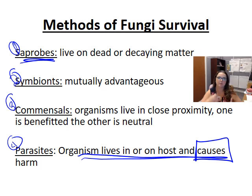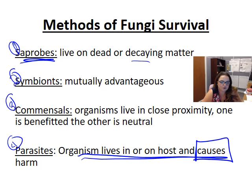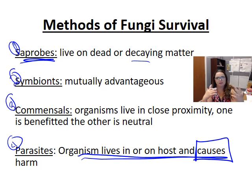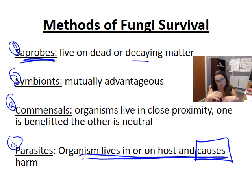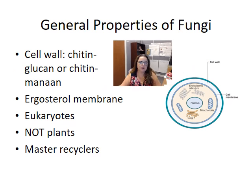Saprobes is a very common way that fungi live — these are fungi that survive on dead or decaying matter. Remember, fungi are master recyclers and this is a main way they get their food source. They can also be mutualistic — living together in a way that helps another species survive. Commensals live in close proximity without necessarily promoting each other. We already talked about parasitism.